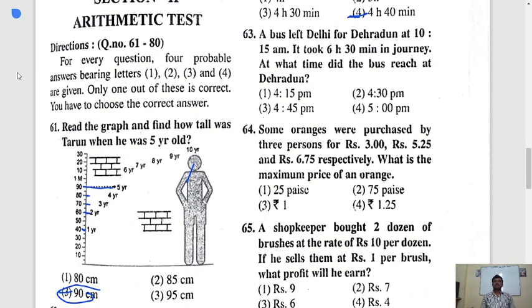Question number 63. A bus left Delhi for Dehradun at 10:15 am. It took 6 hour 30 minutes in journey. At what time did the bus reach at Dehradun? Bus left Delhi for Dehradun. It is moving to Dehradun. 10 hour 15 minutes, 10:15 am they left. It takes how many hours? 6 hour 30 minutes. We have to add 6 hour 30 minutes.